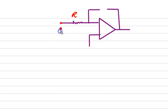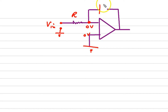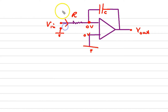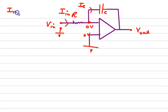The input resistor is R. Input is given here. This is the input voltage which is applied here. The plus terminal is grounded at zero volts, and this point is also virtually ground. There is a feedback capacitor connected here, and output is taken from here. So the input current is I_in, and through the capacitor the current is I_C. I_in equals I_C because the op-amp never draws current.